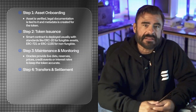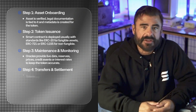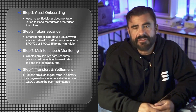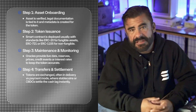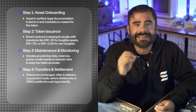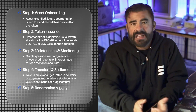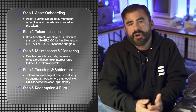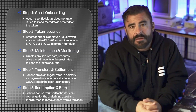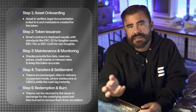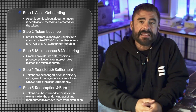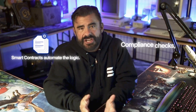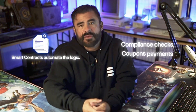Step four is transfers and settlement: tokens are exchanged, often in delivery versus payment mode, where stablecoins or CBDCs settle the cash leg instantly. And step five is redemption and burn: tokens can be returned to the issuer in exchange for the underlying asset, and then burned to remove them from circulation. At each stage, smart contracts automate the logic, whether it's compliance checks, coupon payments, or reporting.